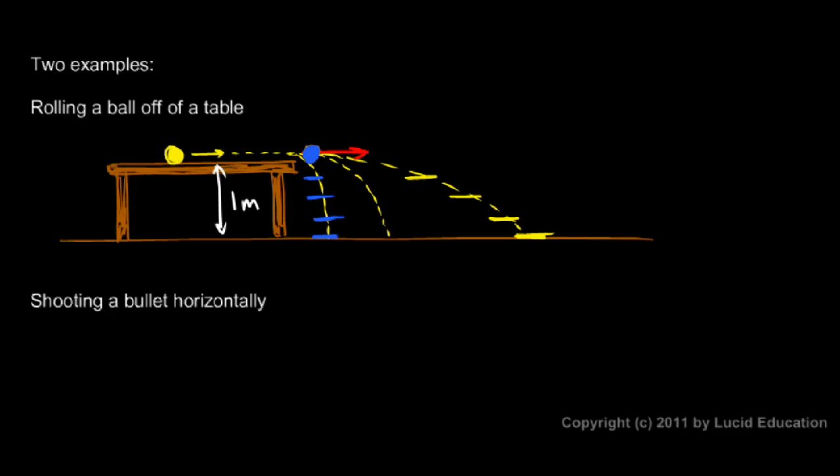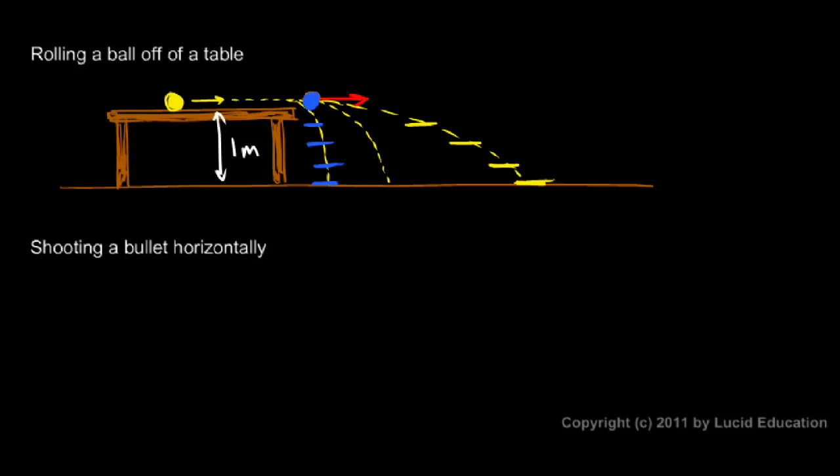The same thing applies to a bullet fired from a gun, and this result is kind of surprising to a lot of people. But if you imagine, again, we'll stand on the ground, so let's draw some horizontal ground here. There's the ground, and let's imagine you're standing here and you've got a bullet and you've got a gun, and you're going to shoot a bullet out of the gun and you're going to shoot it horizontally.